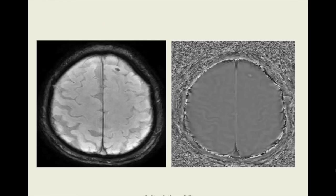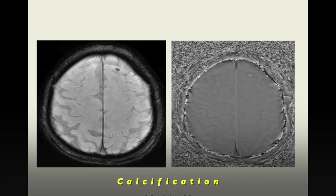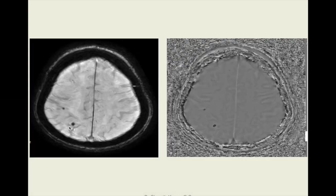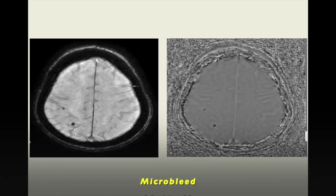Let's see the practical aspect. This patient is hypertensive. The susceptibility magnitude image shows an area of blooming, which could be either a blood product or calcification. The corresponding filtered phase image shows white signal, confirming it is calcification rather than a microbleed. In another hypertensive patient, the axial susceptibility magnitude image shows areas of blooming, and the corresponding filtered phase image shows dark signal, confirming it is a microbleed rather than calcification.